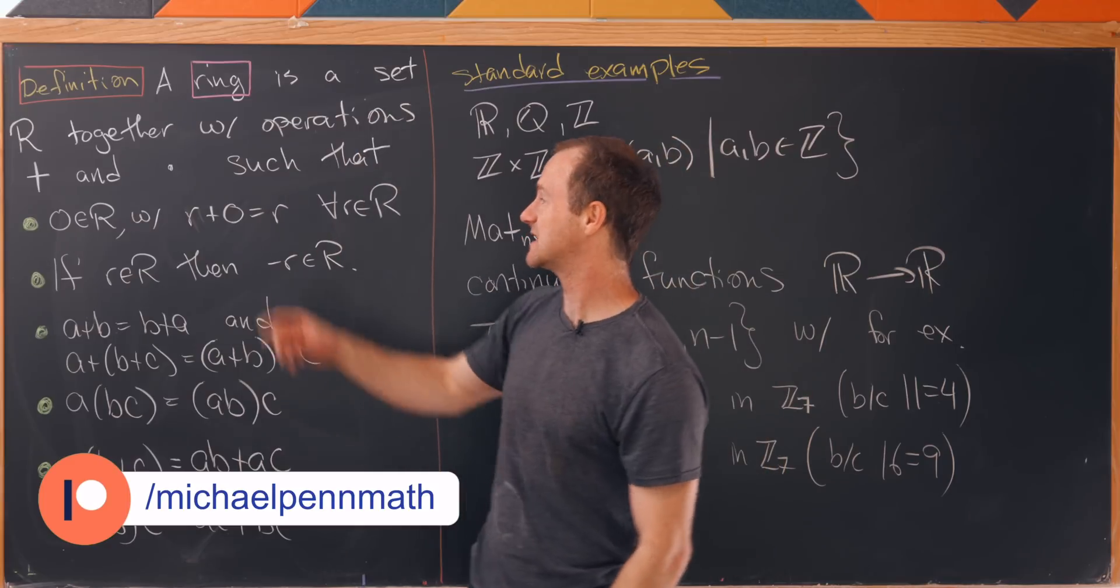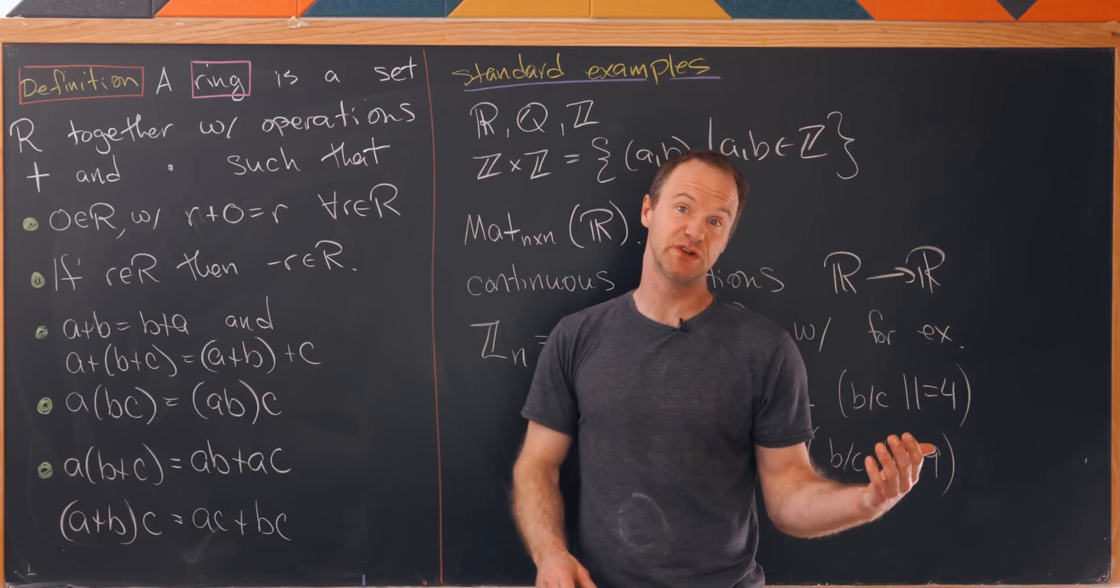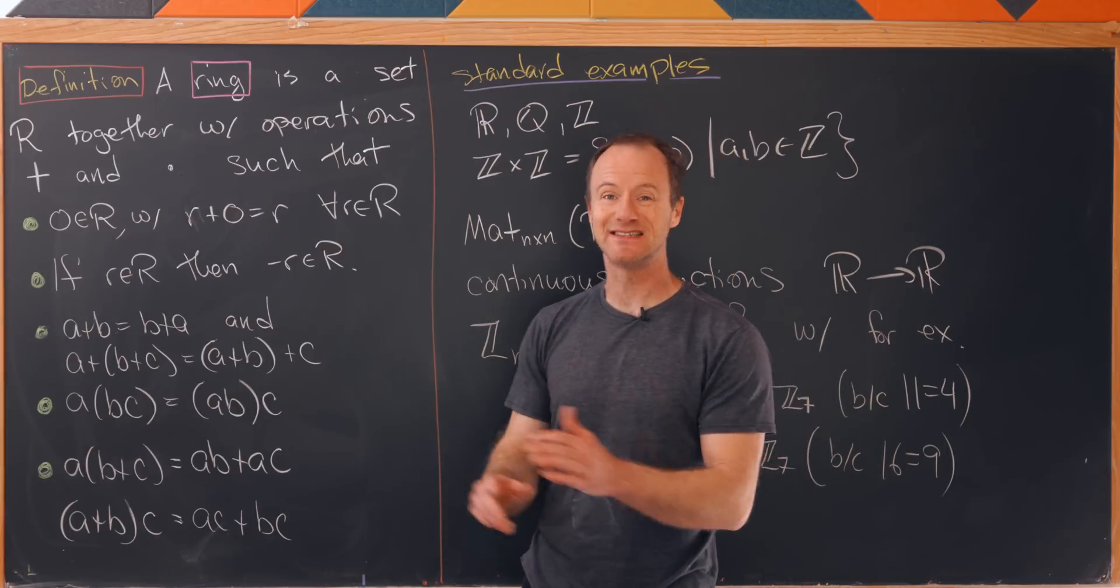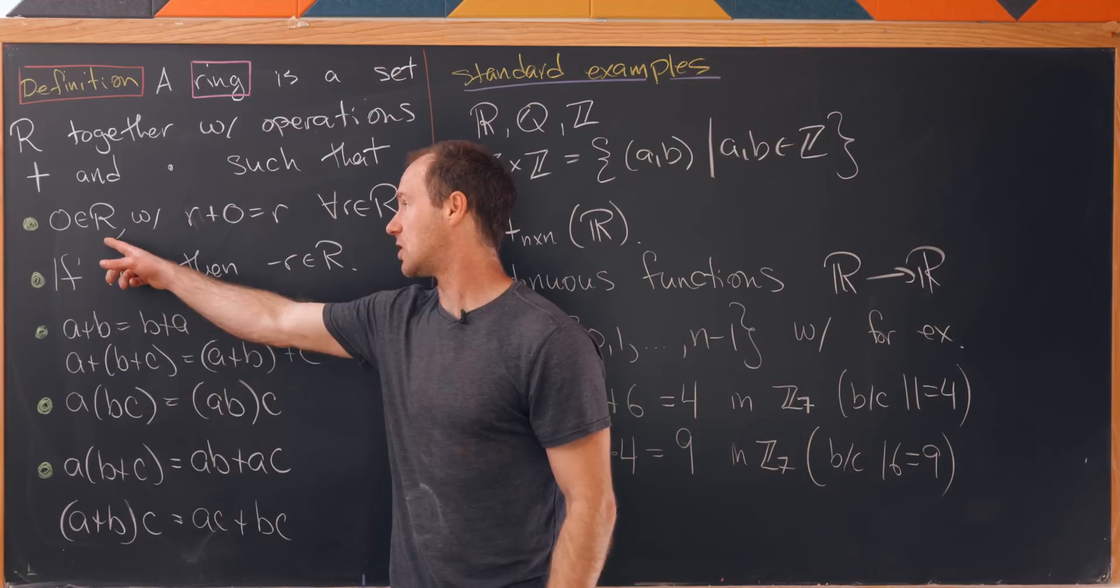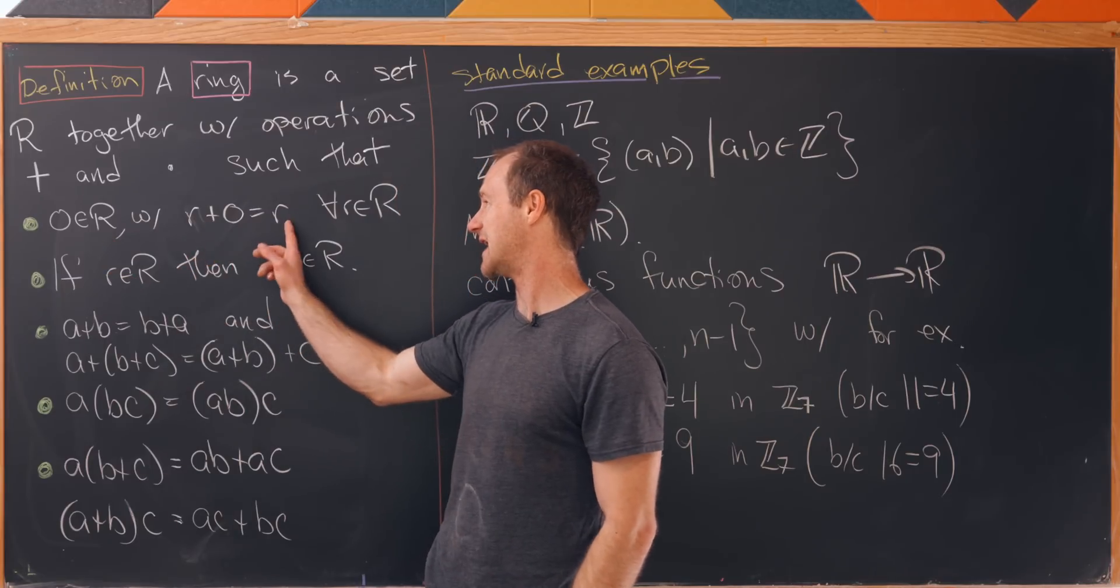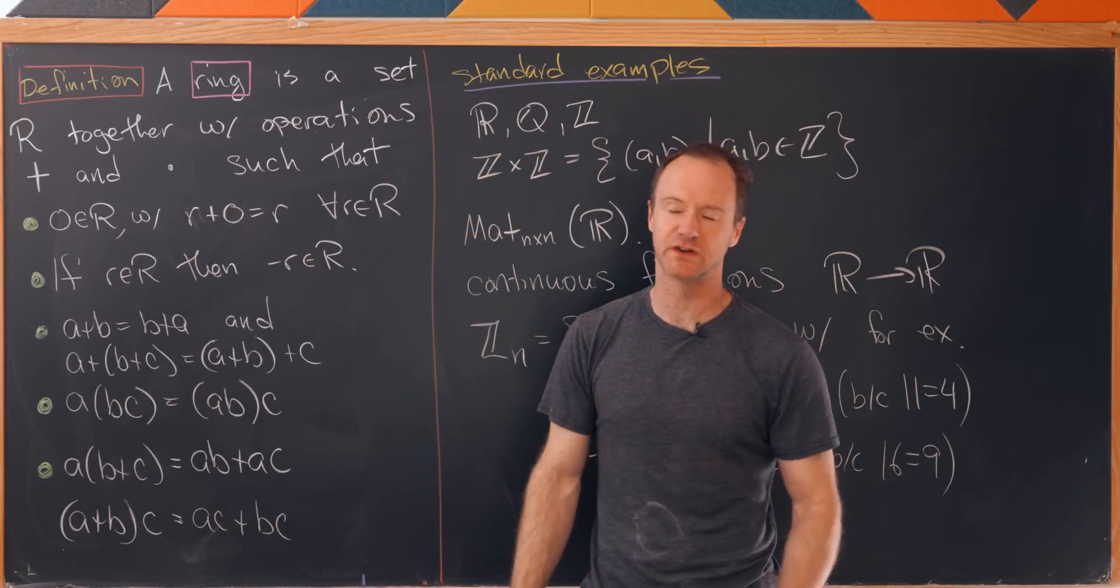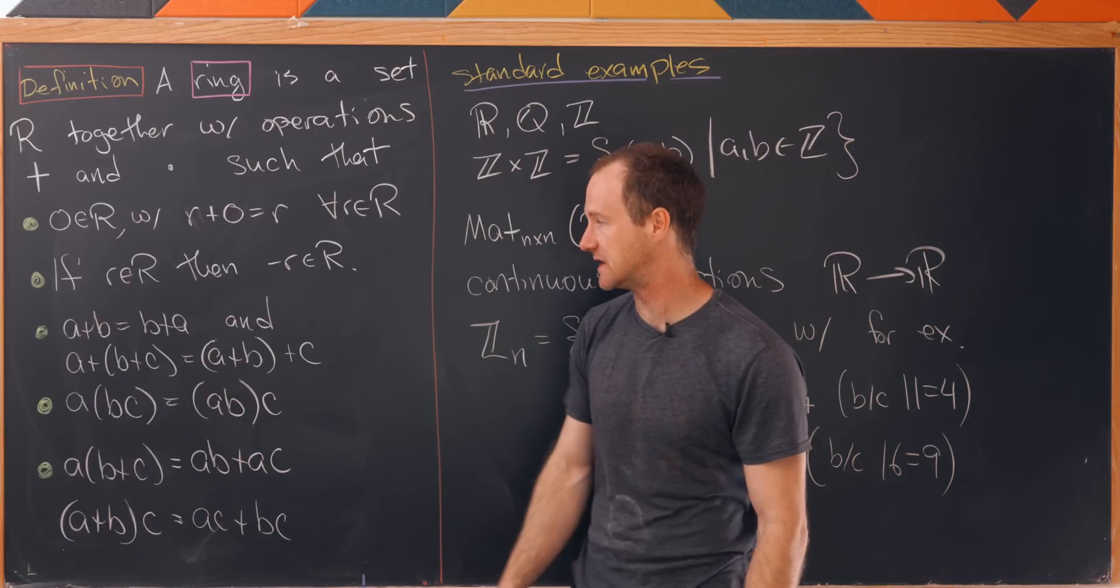It's a set together with two operations which we generally call addition and multiplication satisfying some axioms. We've got an element called zero so that when we add anything from the ring to zero you get whatever you started with. So that's like an additive identity.